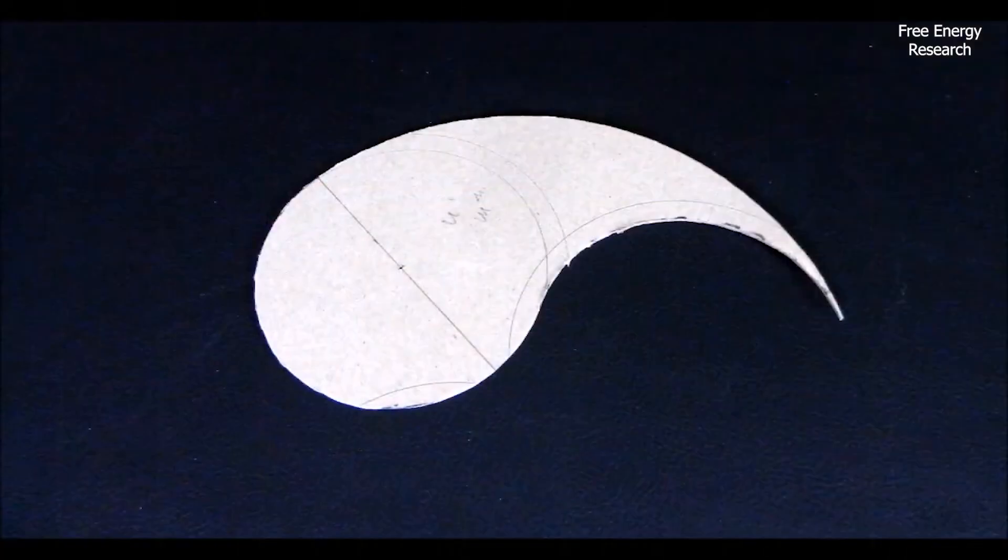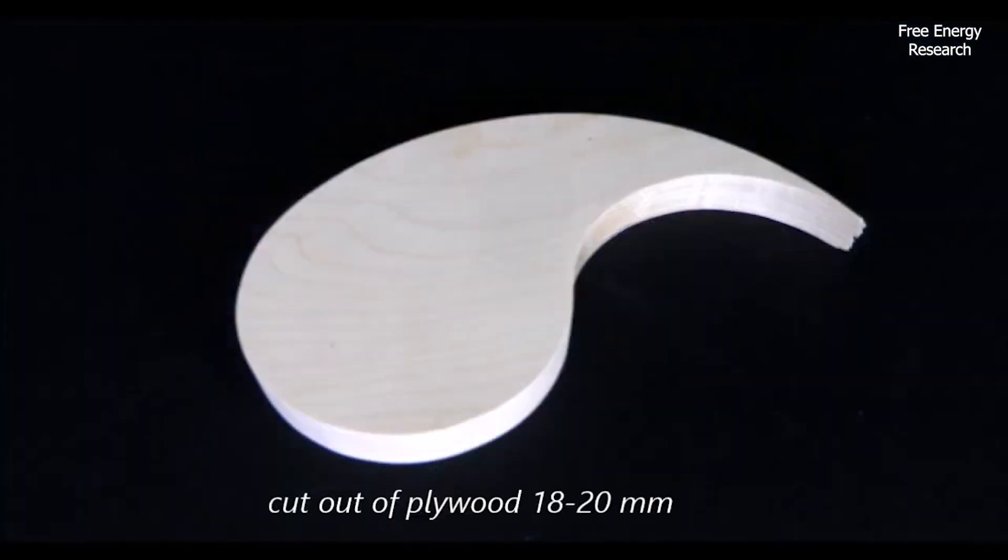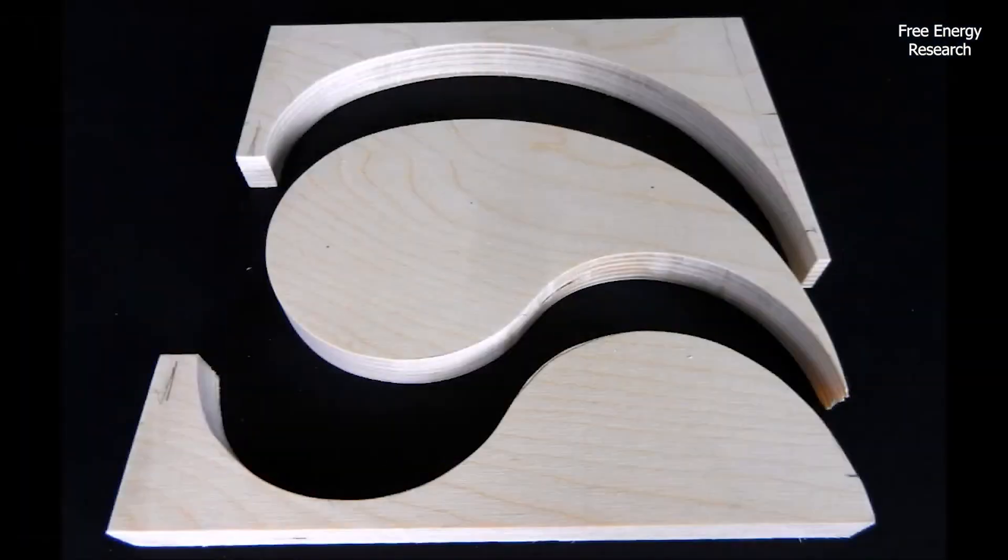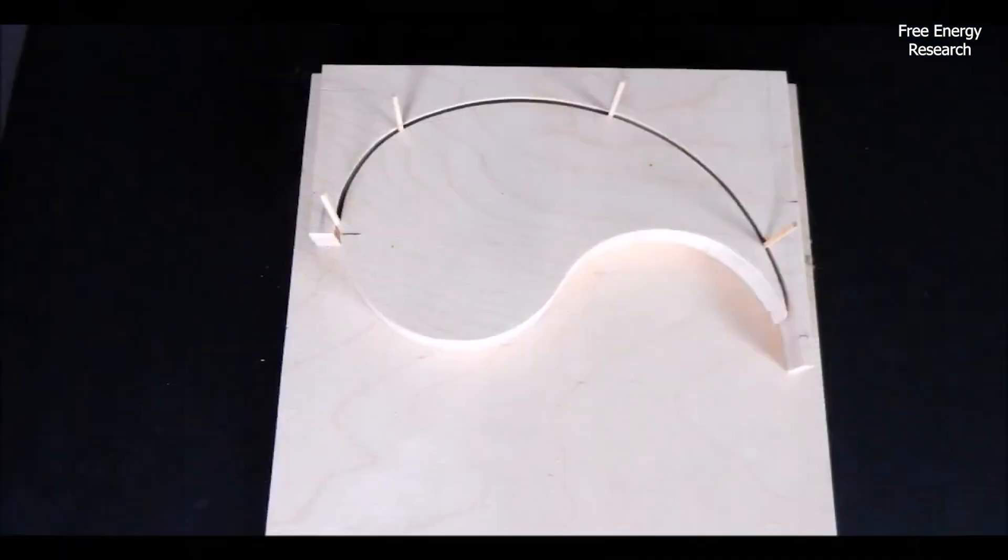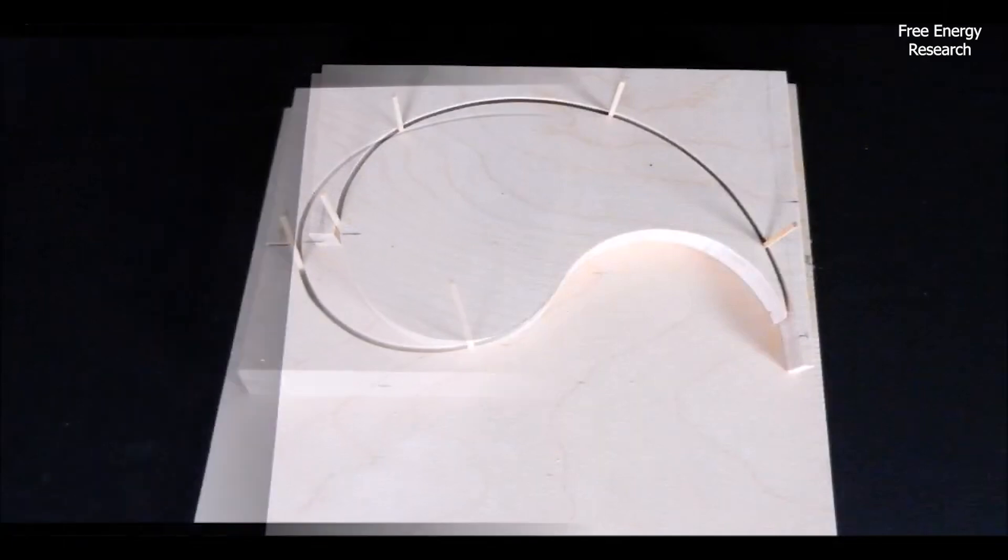Once the blueprint is ready, it's transferred onto plywood, where the chambers are cut out with smooth, curved edges. These spaces will guide the movement of the liquid inside the wheel.